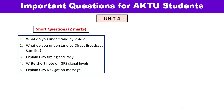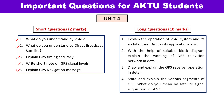Unit 4 covers three major topics: VSAT, DBS, and GPS. Short questions may include: what is VSAT (Very Small Aperture Terminal), what is DBS (Direct Broadcast Satellite), GPS applications, GPS timing accuracy, GPS signal levels, and what navigation messages exist in GPS. For long questions: how does VSAT operate, what architectures are possible, and what are its applications. For DBS television — draw the block diagram and explain its working; this has been a repeated exam question for the last two years. For GPS: explain GPS receiver operation, the various segments of GPS, and what satellite signal acquisition means.